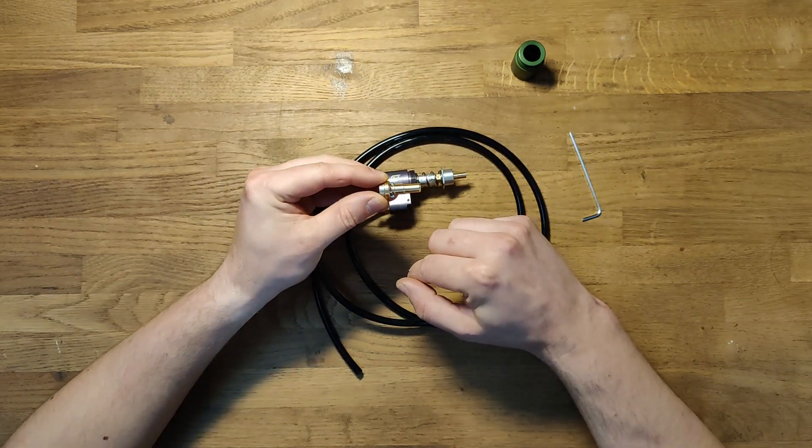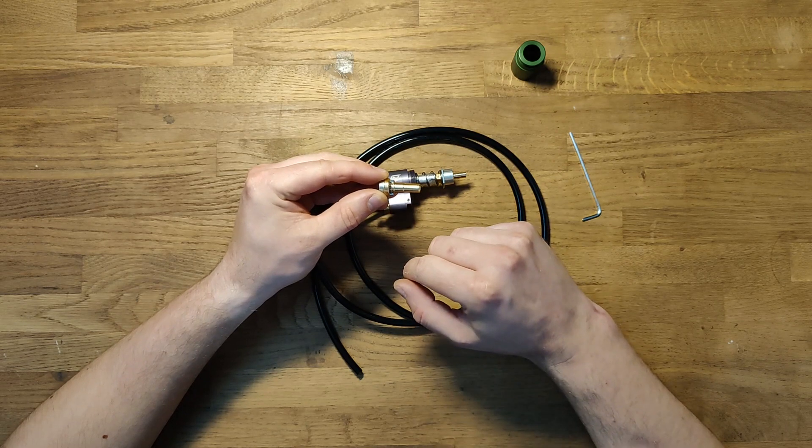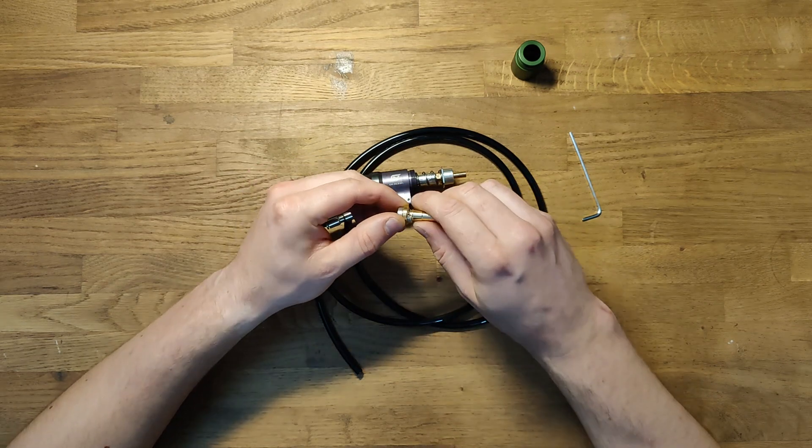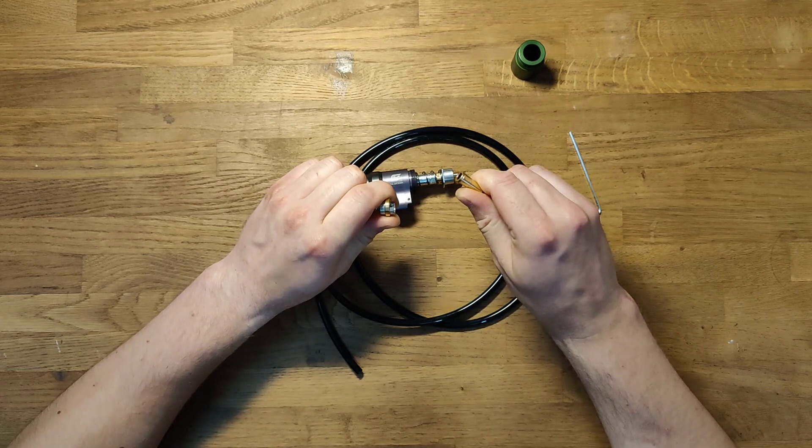To take out the nozzle from the threaded part you have to push it out. Usually it's quite tight. You will hear a click.